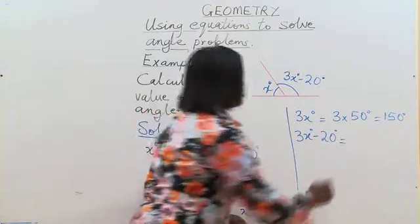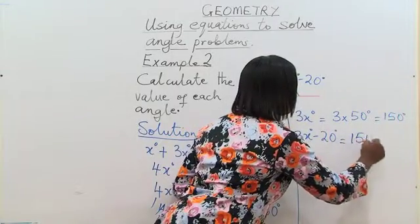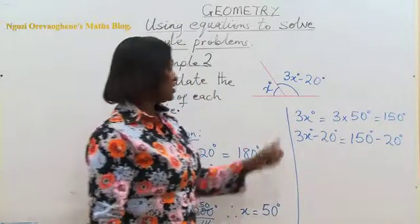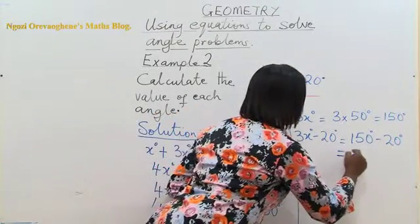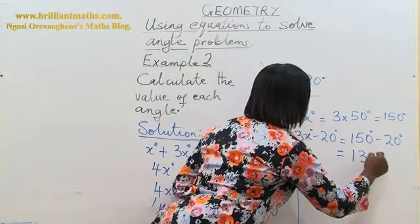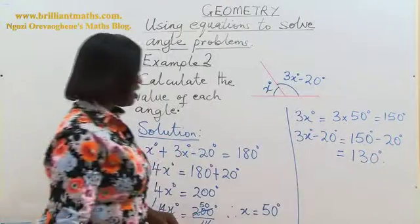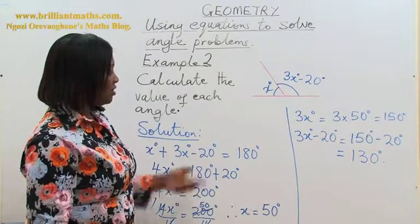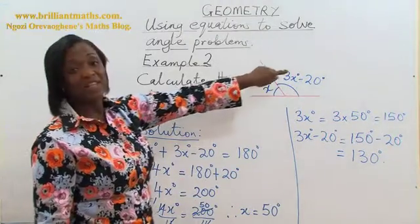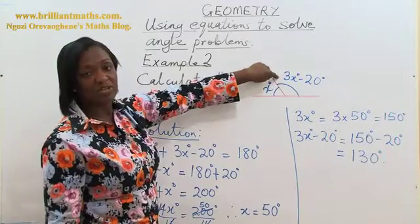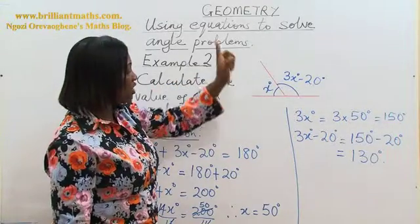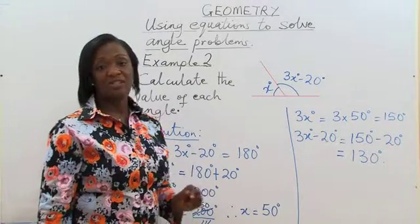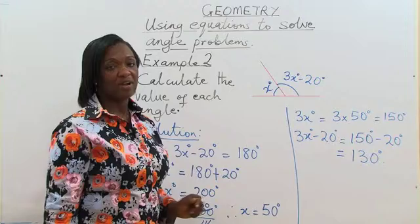And by simple addition, if this is 50 degrees and the second angle is 130 degrees, 50 degrees plus 130 degrees gives us 180 degrees. So our answer is correct.